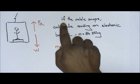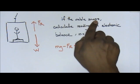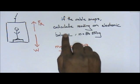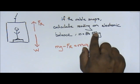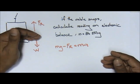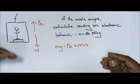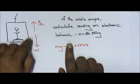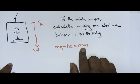If the cable snaps, calculate the reading on the electronic balance. Mass is given as 85 kilograms. Standard, guys: lift cable snaps, the lift is going down. If the lift is going down, mg minus FR equals ma.